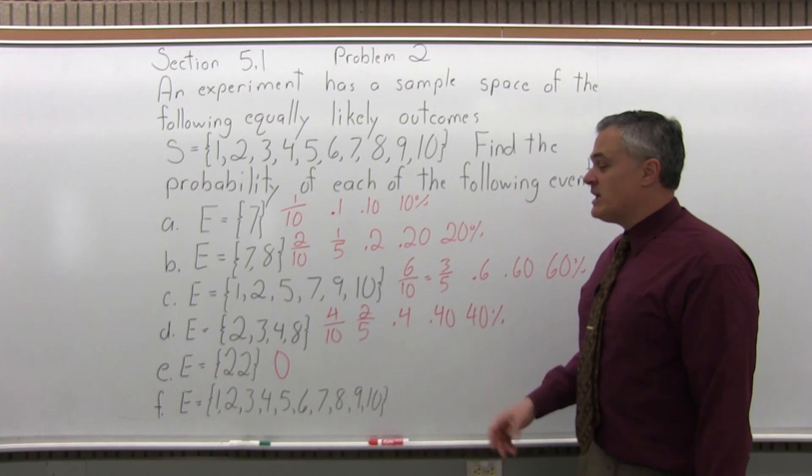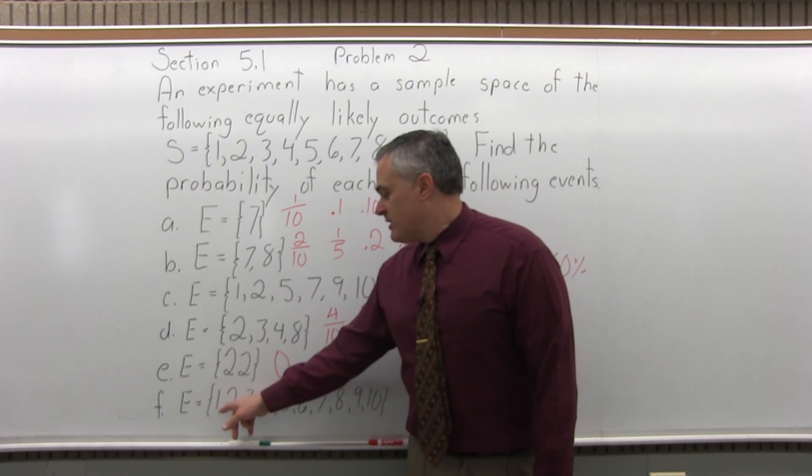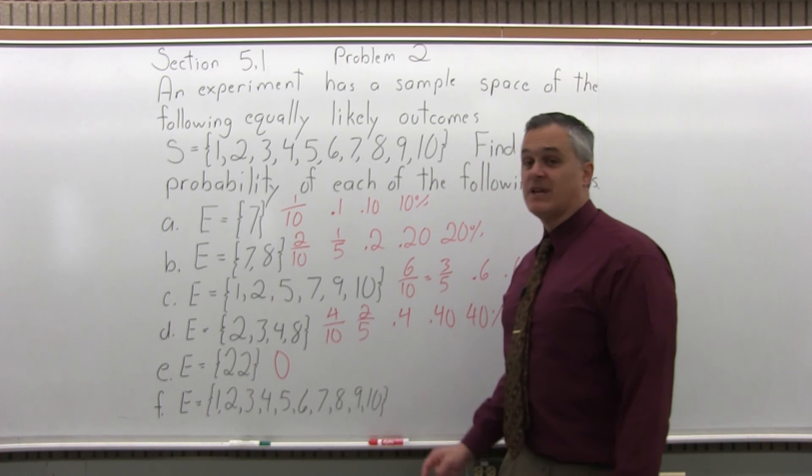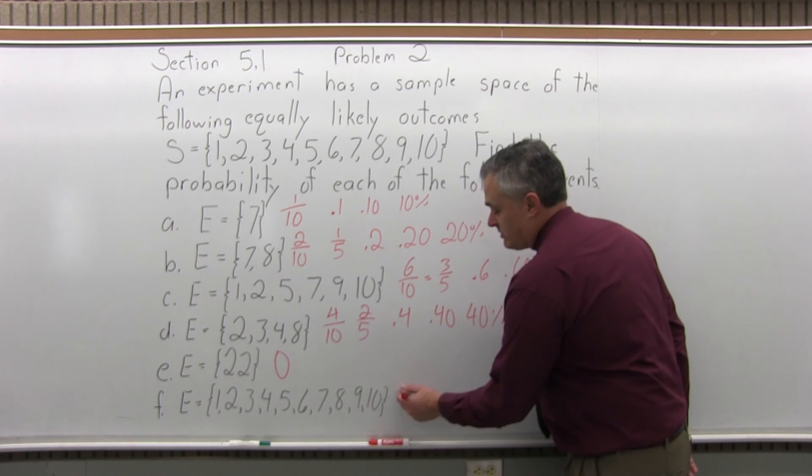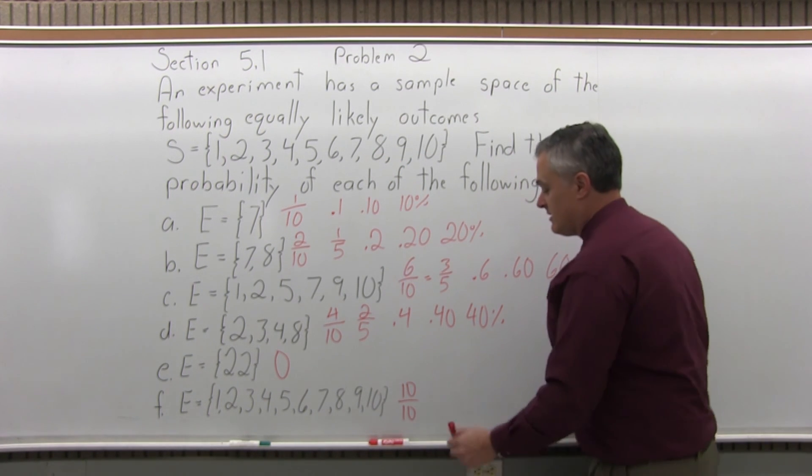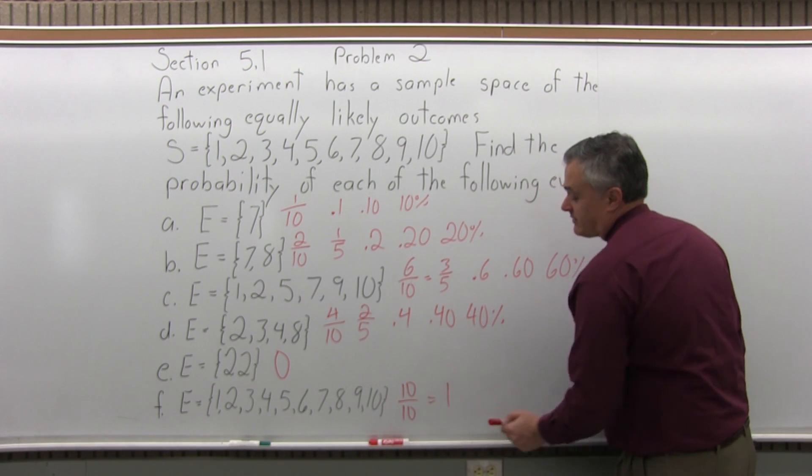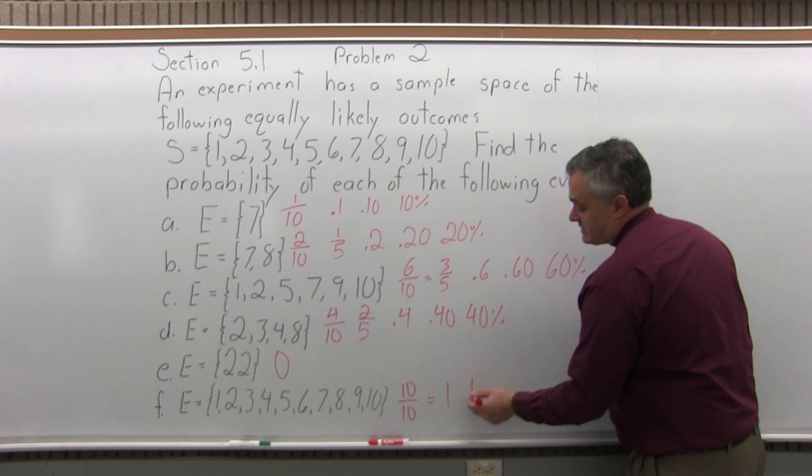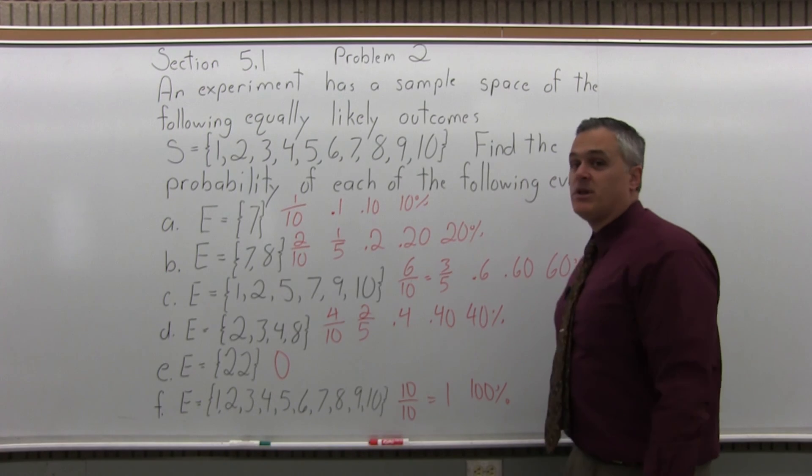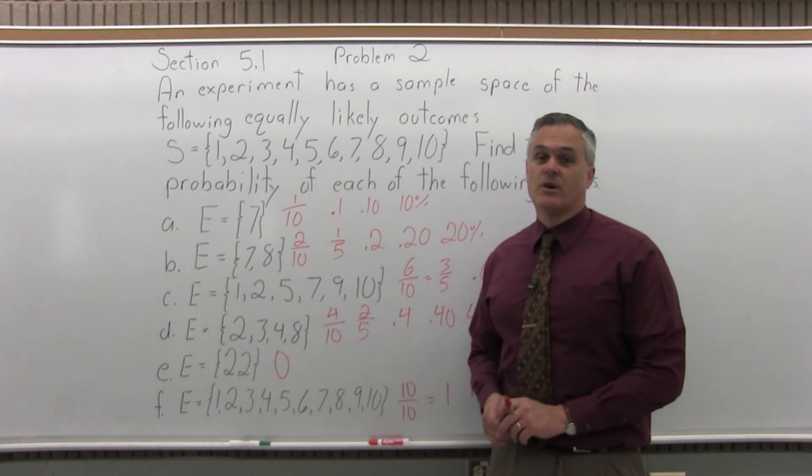And the other extreme is part F. What's the probability of the event being all 1 through 10? 1, 2, 3, 4, 5, 6, 7, 8, 9, 10. Well, you have all 10 possibilities out of the 10 you can get altogether, 10 over 10, which you could reduce to 1, which is 100%. Again, a probability of 1 or 100% means something's certain to occur.